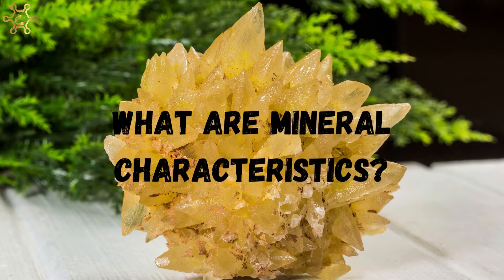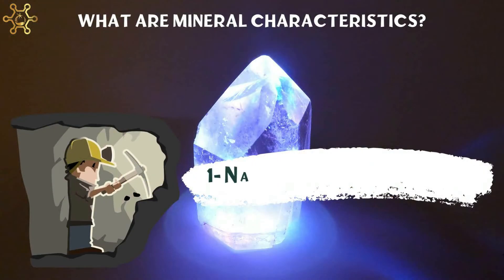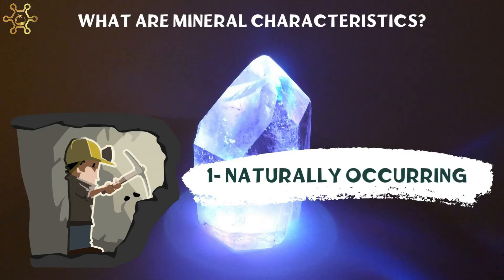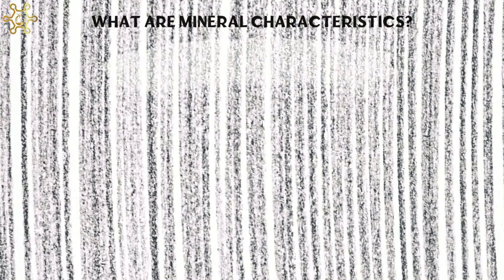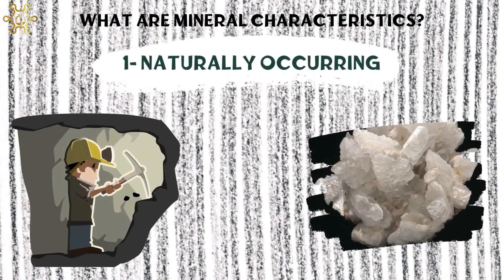What are mineral characteristics? Number 1: Naturally occurring. All minerals are substances that form by natural processes. Gypsum, for example, forms naturally from chemical elements that precipitate from water.